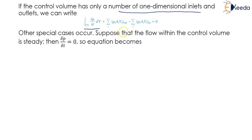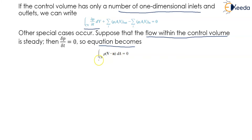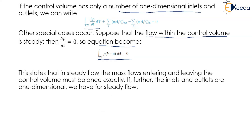Another special case occurs when the flow within the control volume is steady, then ∂ρ/∂t is equal to zero. The equation becomes the integral of ρ multiplied by V dot N multiplied by dA, integrated through the cross section. This states that in a steady flow, the mass flow entering and leaving the control volume must balance exactly.